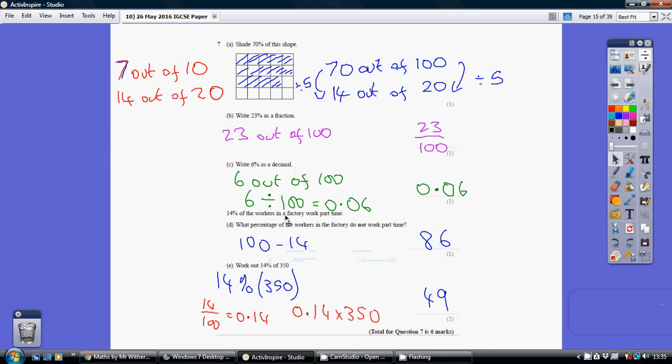Now 14% of the workers in the factory work part time. What percentage of the workers in the factory do not work part time? Well, that's the rest of them. So if we've got 100 workers, 14 of them work part time. Those who do not work part time must be 100 take away 14, which is 86.